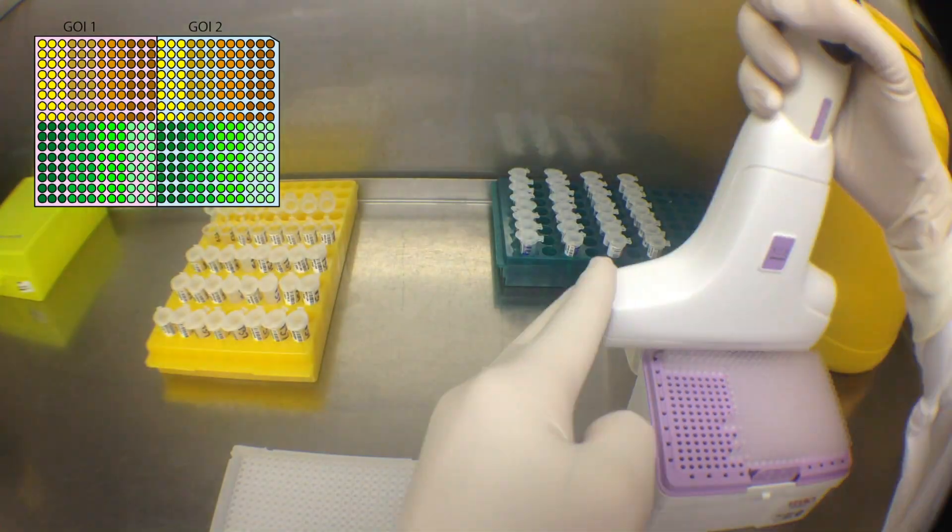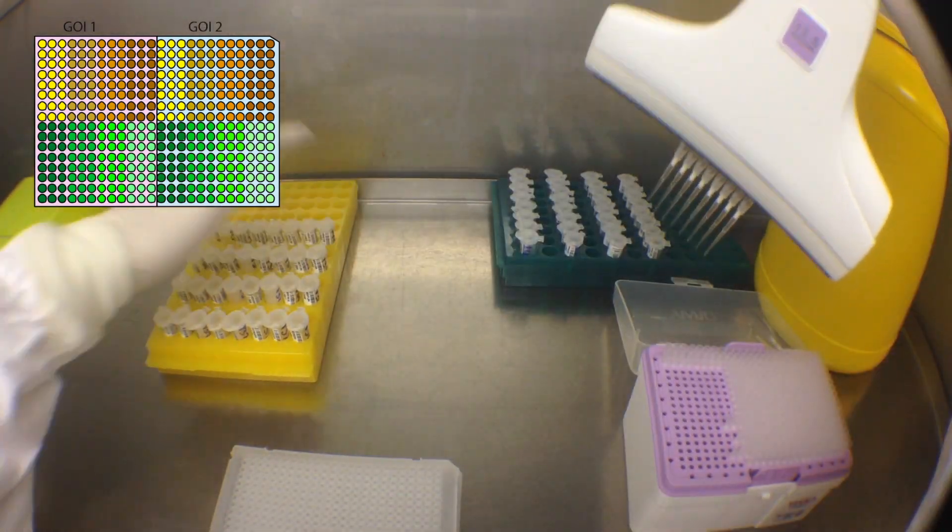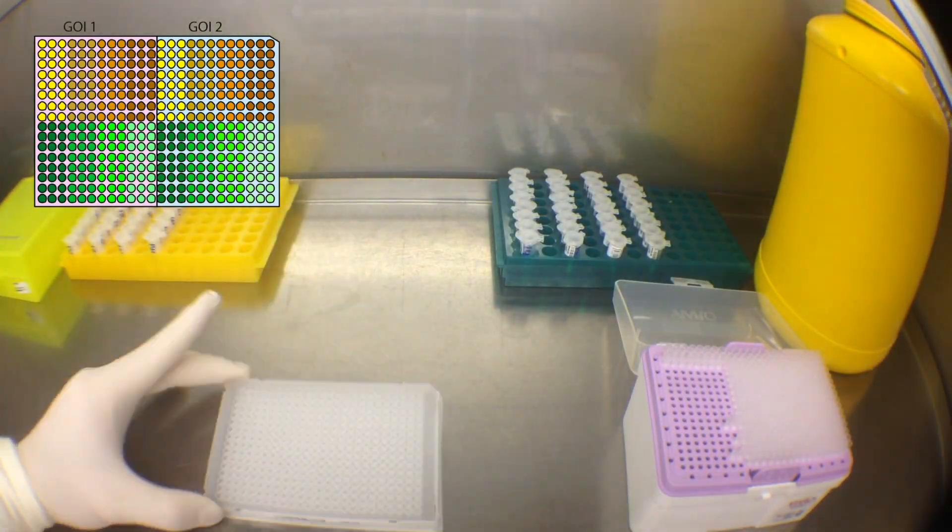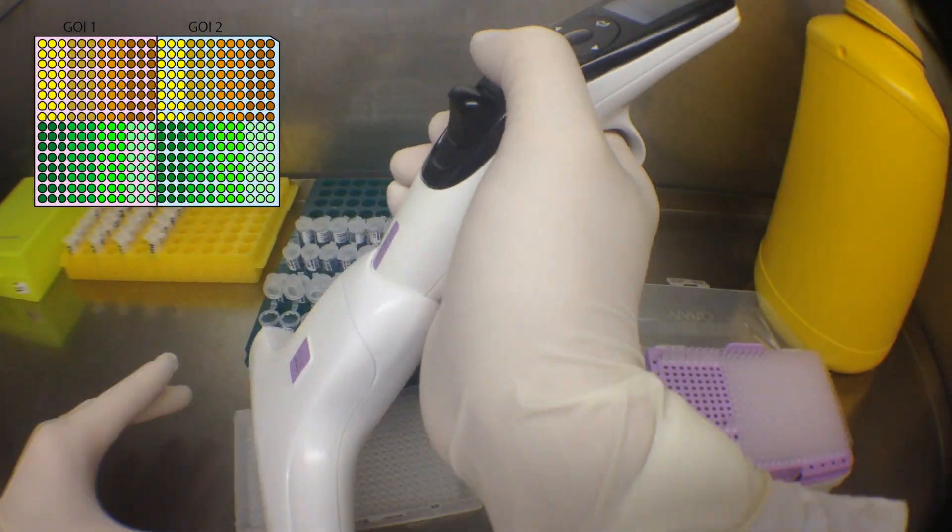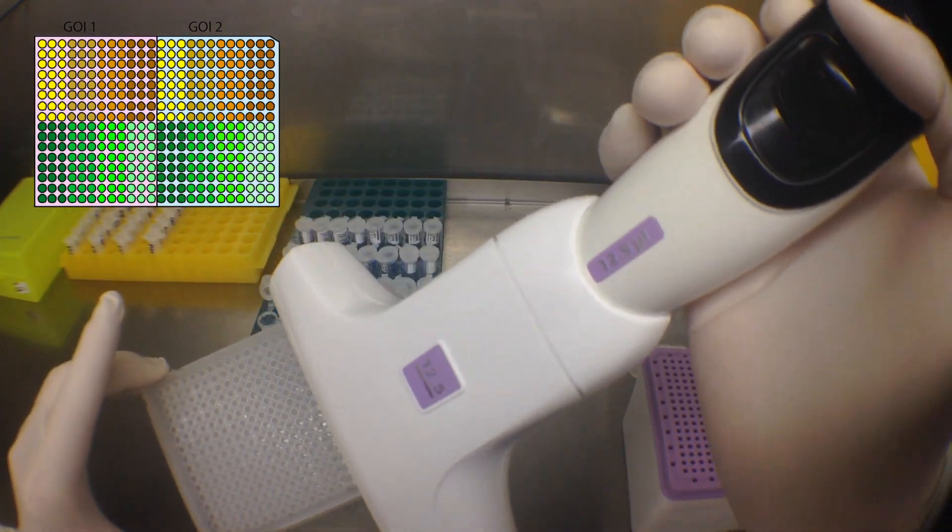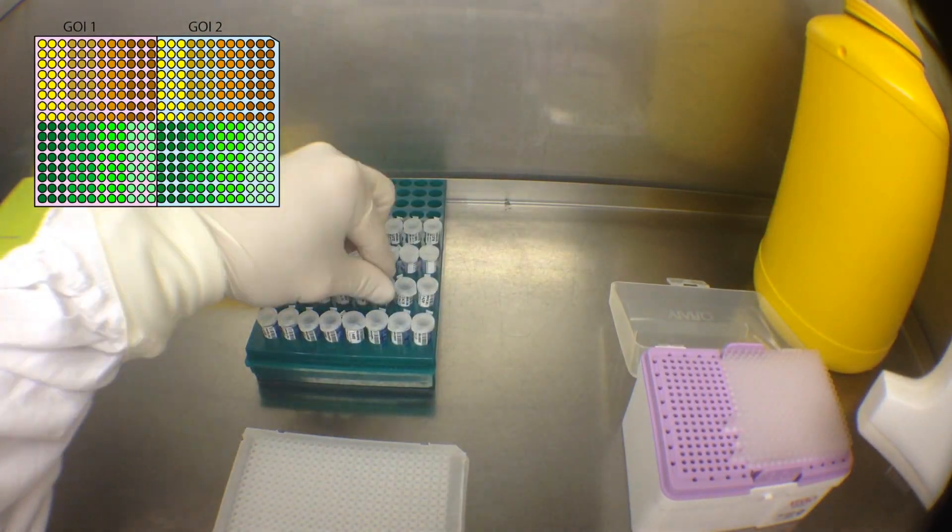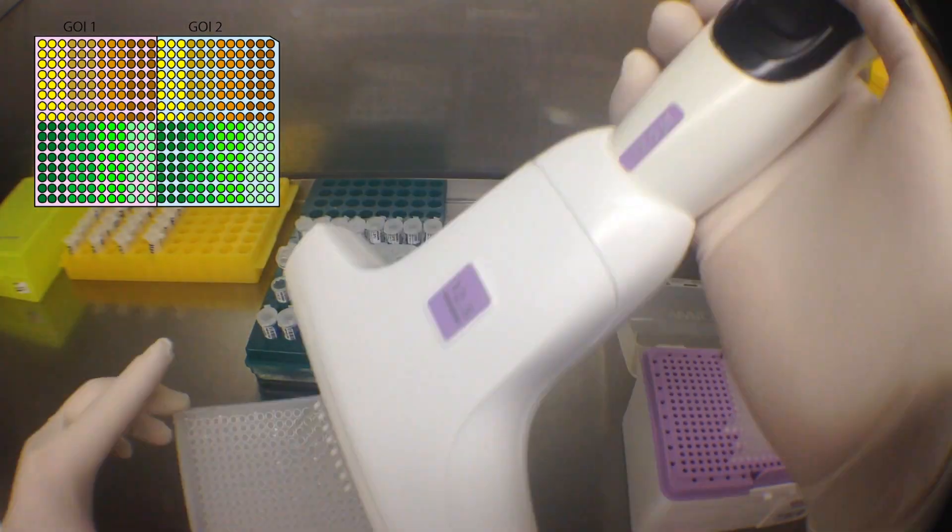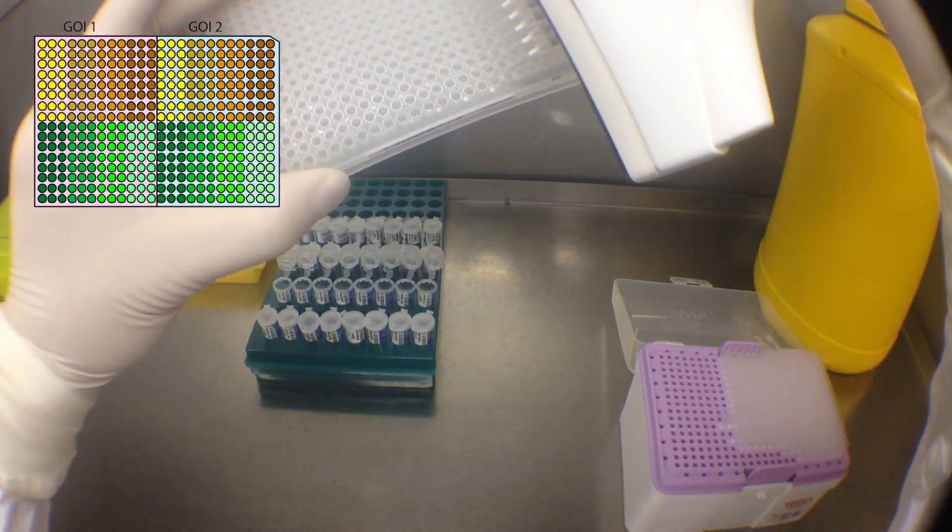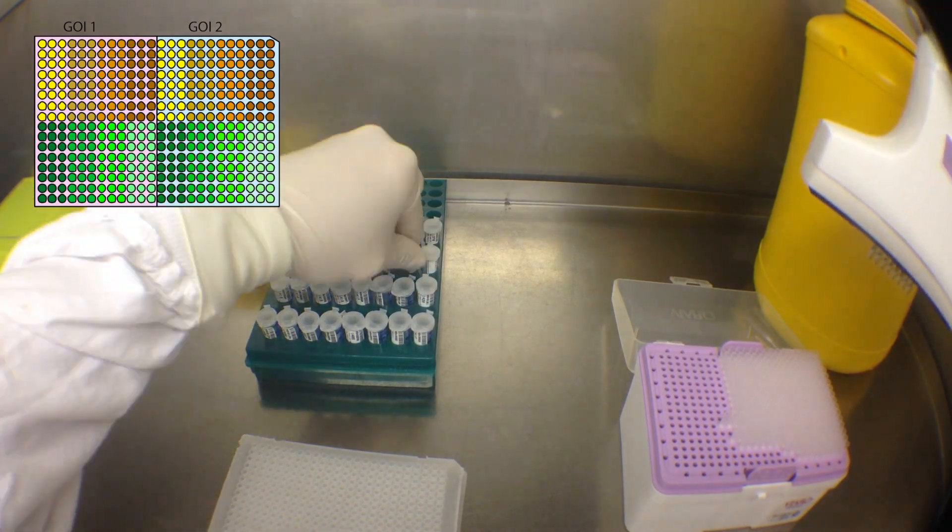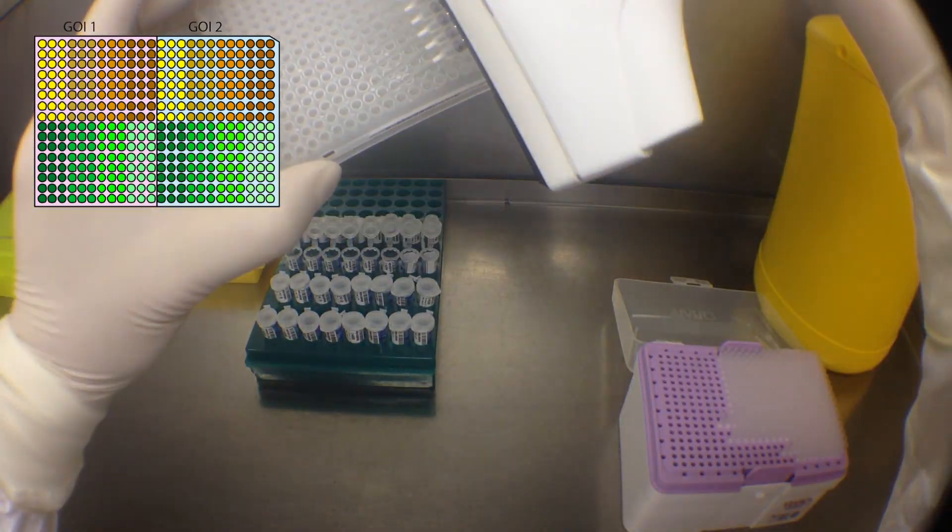Although you could use a liquid handling robot to do a lot of this pipetting for you, these robots are only good for routine processing. If I'm regularly changing the layouts of my plates or sample numbers, I find that I have greater control using these pipettes instead. In the same time needed to program the robot, I can prepare the 384-well plate by hand. This experiment has taken less than 10 minutes to set up.